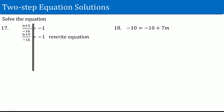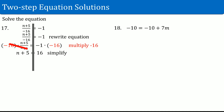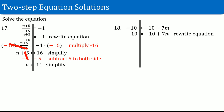Number seventeen: (n + 5) divided by negative 16 equals negative 1. Rewrite the equation and draw a line straight down. A lot of students will try to subtract the 5 first — you cannot do that. The plus 5 is stuck inside the fraction, so you have to deal with the fraction first. The inverse of divide by negative 16 is to multiply by negative 16. You see the cancellation. On the left-hand side you have n plus 5. On the right-hand side, negative 1 times negative 16 is 16. Now subtract 5 from both sides. Plus 5 and subtract 5 cancel out. What you have left is n. On the right-hand side, 16 subtract 5 is 11.